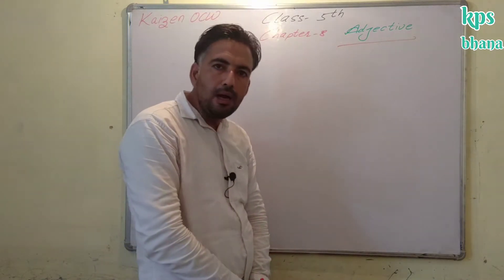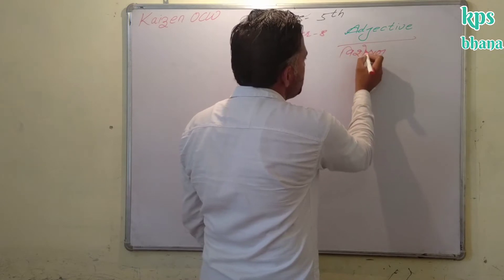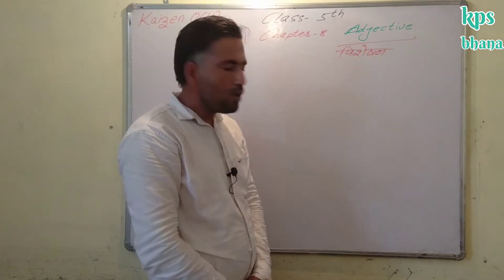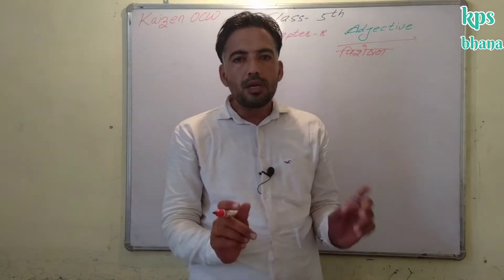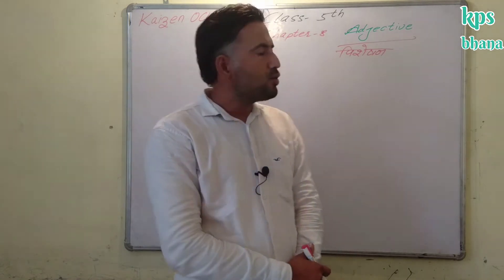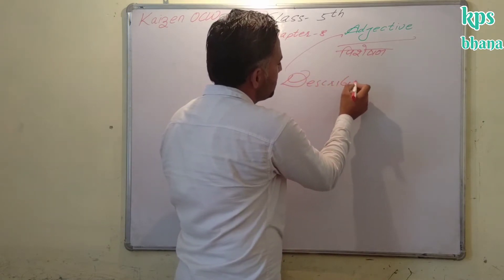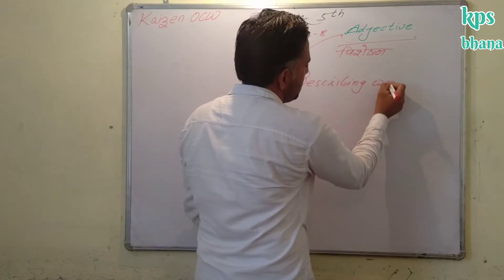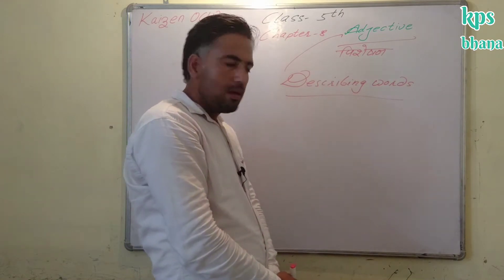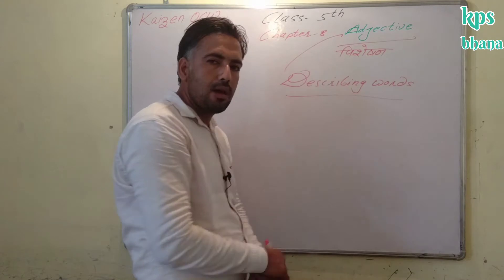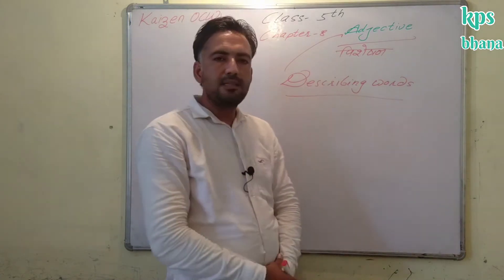Adjective means 'visheshan'. Visheshan kya hota hai? Jo shabd sangya ya sarvnaam naam ki visheshta batata hai. So here, adjectives are describing words. They tell us more about the noun or pronoun. Jo kisi ke baare mein adhik batata hai, wo adjective ho gaya.